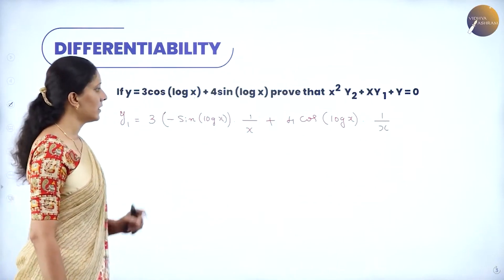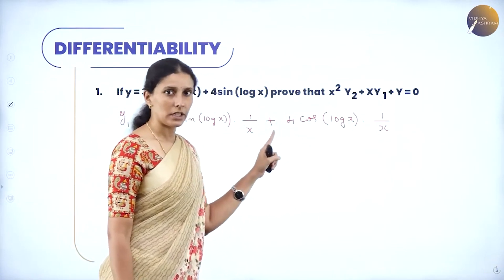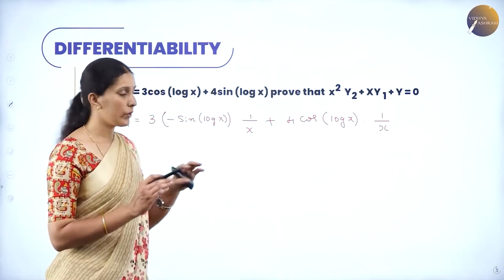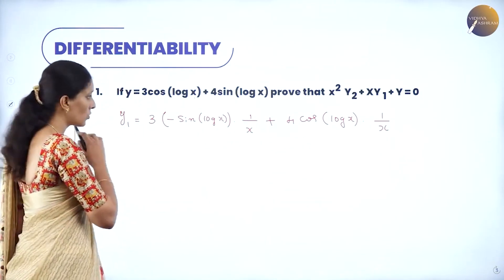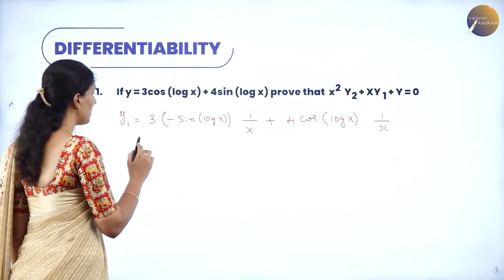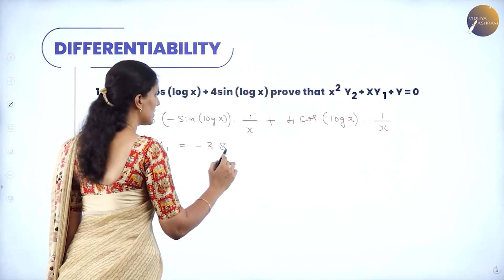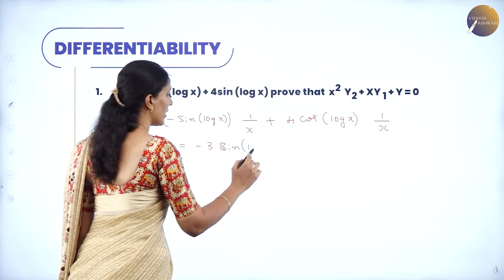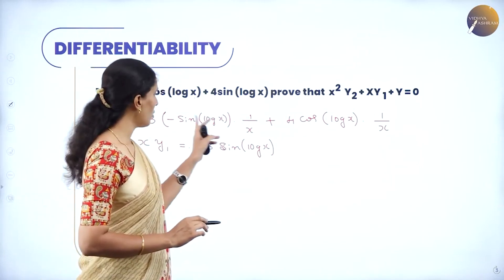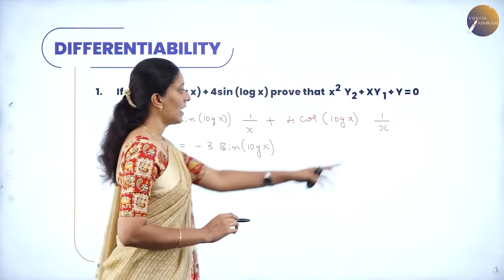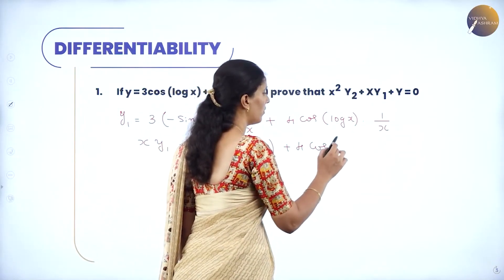Here 1/x is a common factor in both terms. To remove x in the denominator, I multiply x throughout the equation. So this becomes x·y1 = −3sin(log x) and here x and x cancel, giving 4cos(log x). So x·y1 = −3sin(log x) + 4cos(log x).